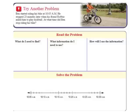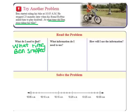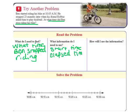What do I need to find first? What time Ben stopped riding his bike? What information do I need to use? I need to use his start time and the elapsed time. So in other words, how long he was riding for. So the start time is 10:05. The elapsed time is 23 minutes. How will I use the information? I'm going to do a timeline to count forward this time.